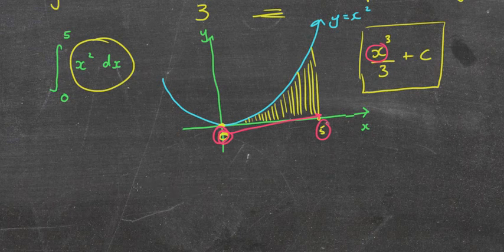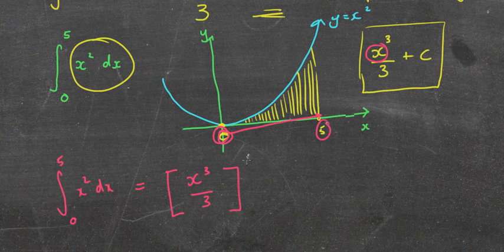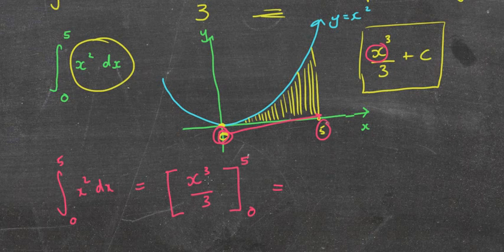So what I'm going to do, and this is how we set it up: ∫₀⁵ x² dx equals... Now this is how we generally set it up. I know it's going to look strange to start with. x³/3, now that's where I've integrated it, and I'm going to put my 5 here and my 0 here. It's important you set it out this way every time.